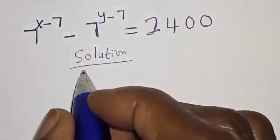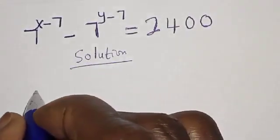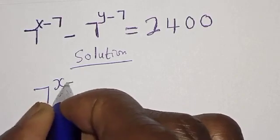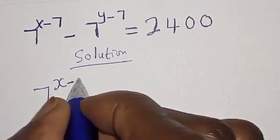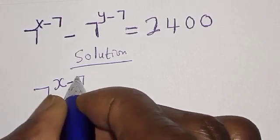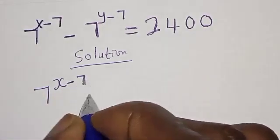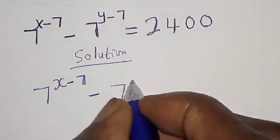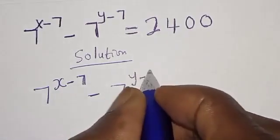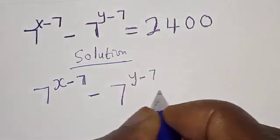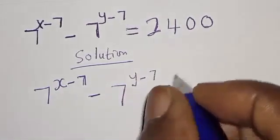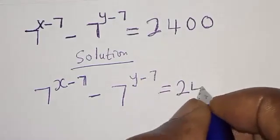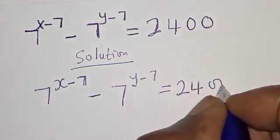We have the given equation: 7 raised to power x minus 7, minus 7 raised to power y minus 7, is equal to 2400.